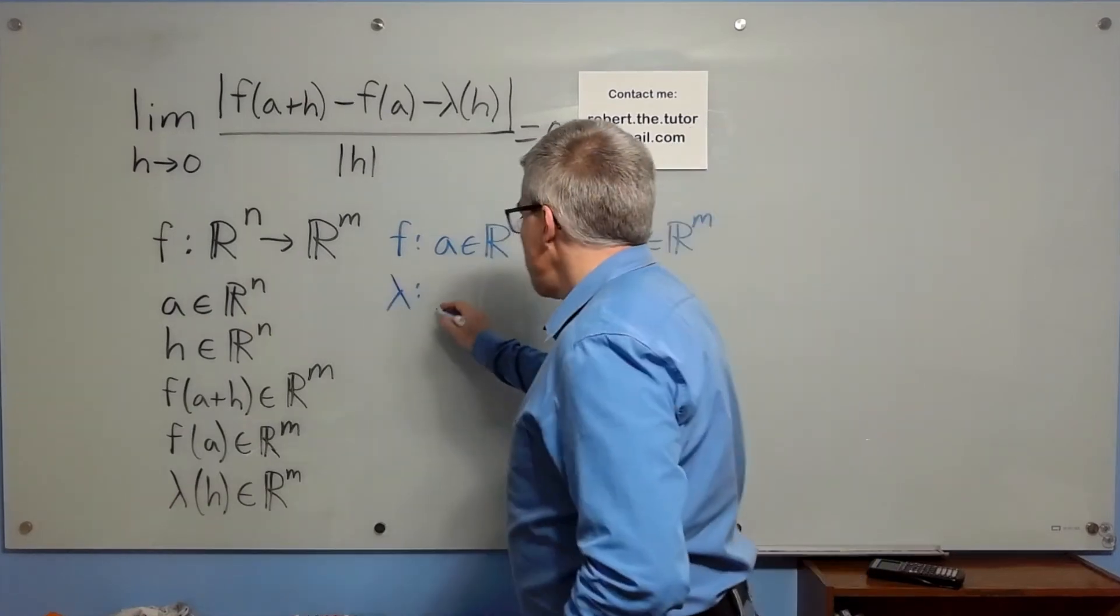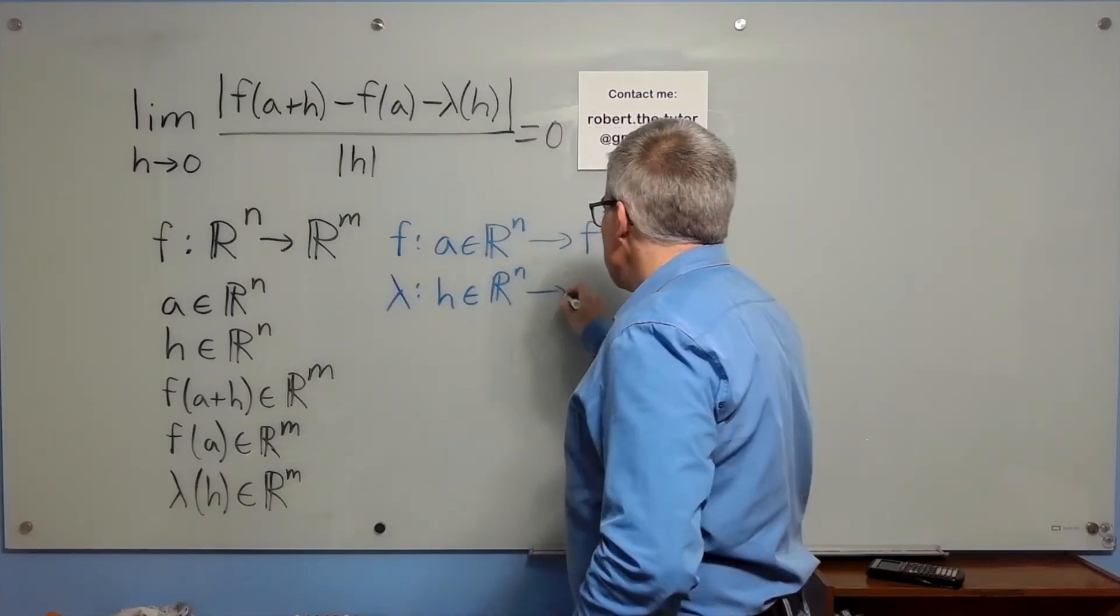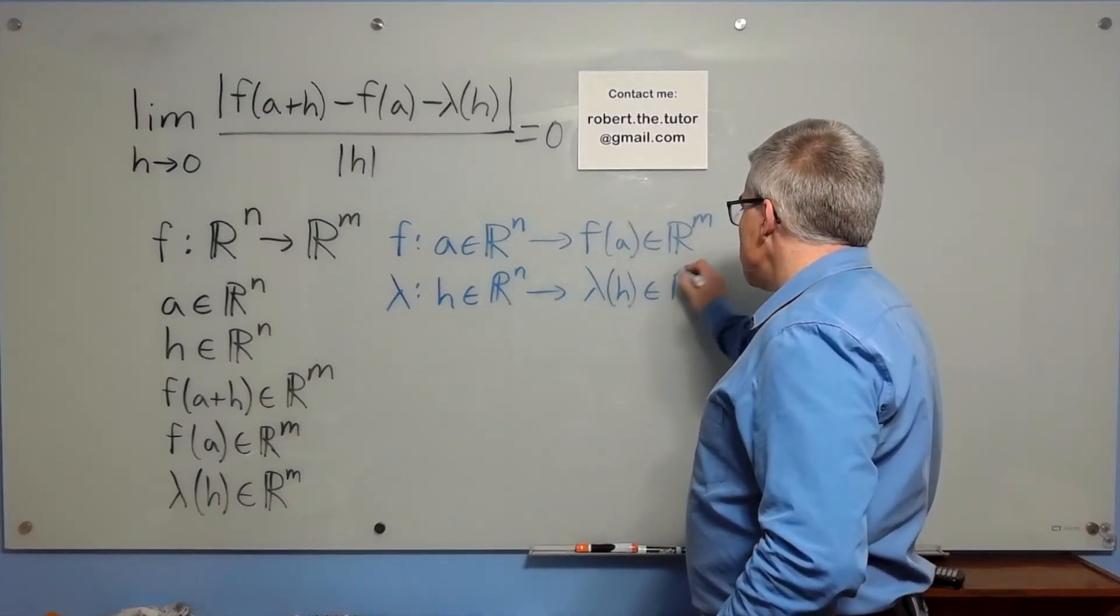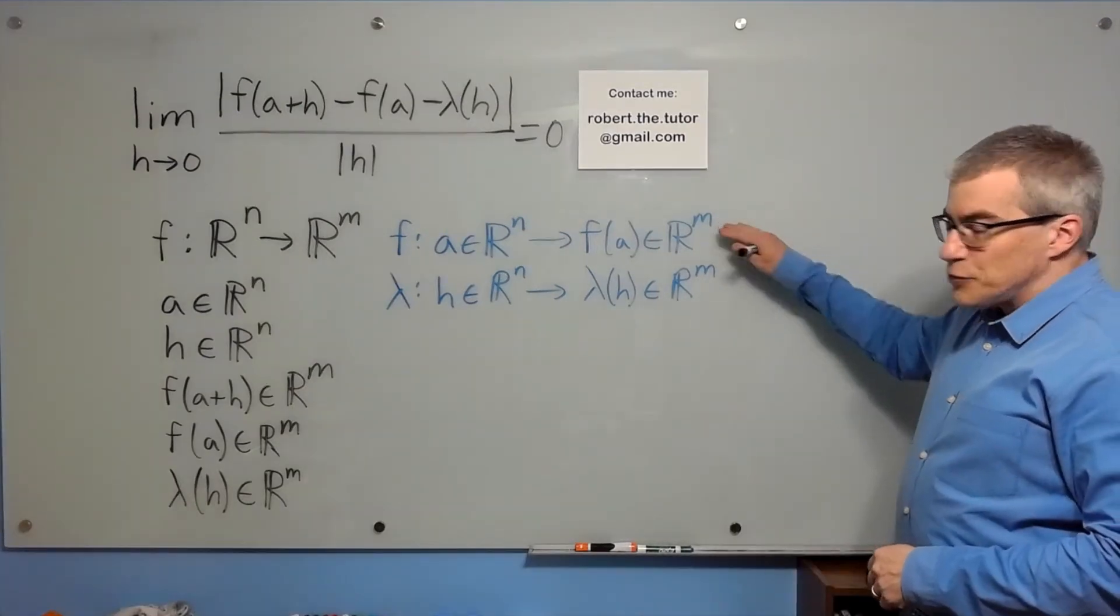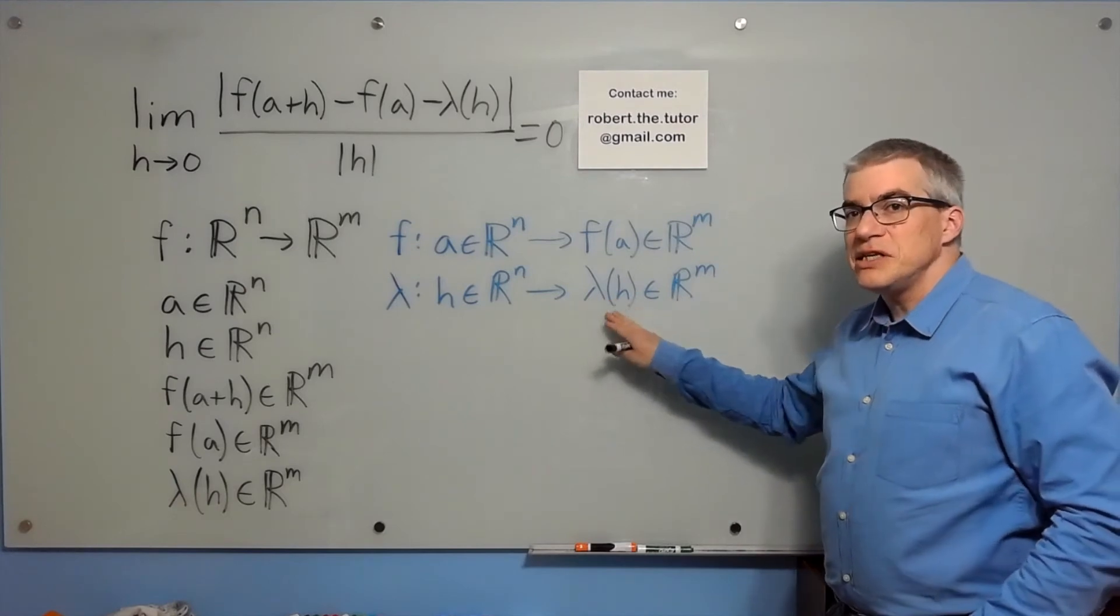Lambda takes an h, which is an element of R^n, and gives lambda of h, which is an element of R^m. An important difference between them is that f is an arbitrary function and lambda is a linear transformation.